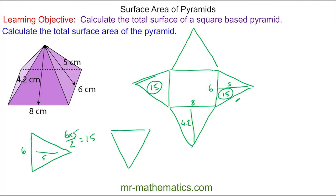we have eight by 4.2, so this gives an area of 16.8 centimeters squared, and the same on the other side. Plus the area of the rectangle in the middle which is six times eight, so that's 48.